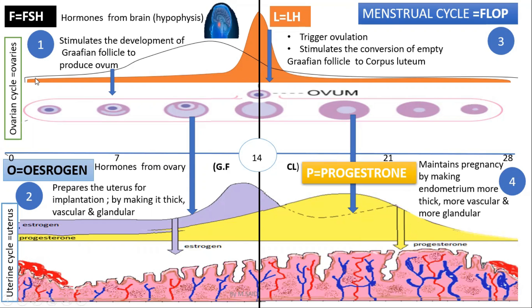If they ask you about the ovarian cycle only, you only talk about hormones one and three — follicle-stimulating hormone and luteinizing hormone. If you are asked to talk about the uterine cycle, you only talk about oestrogen and progesterone — hormones two and four.